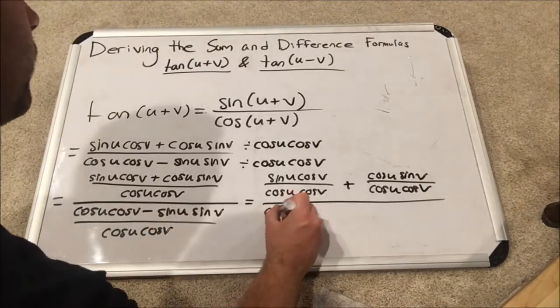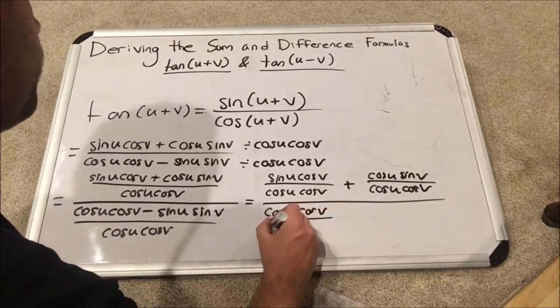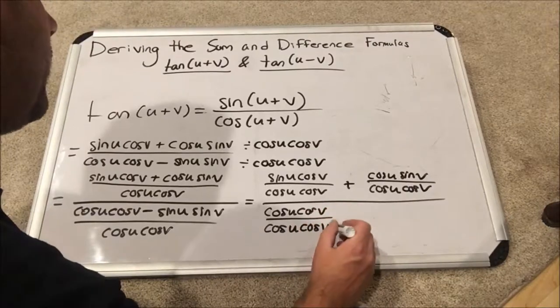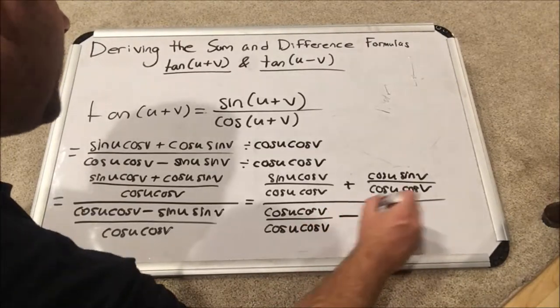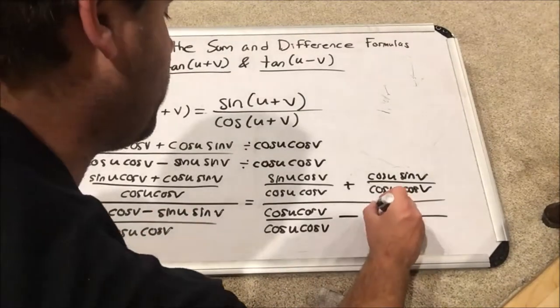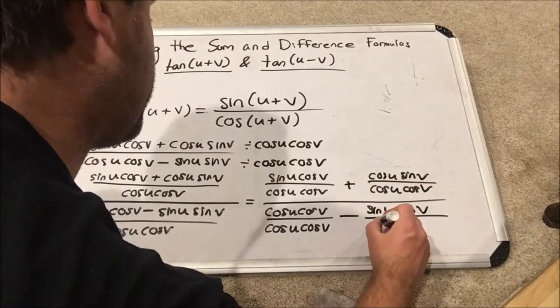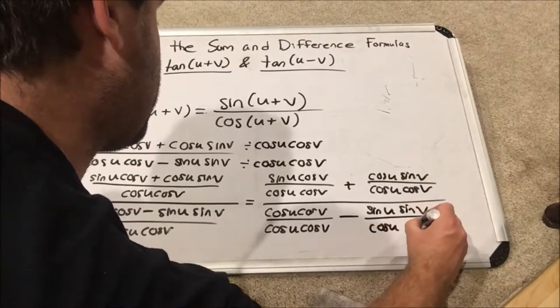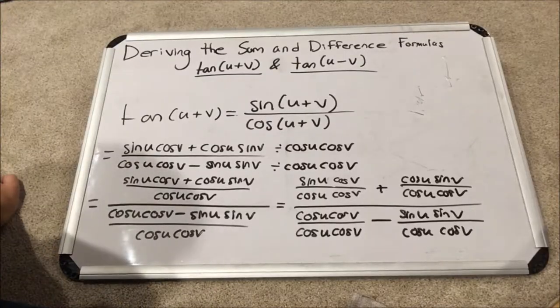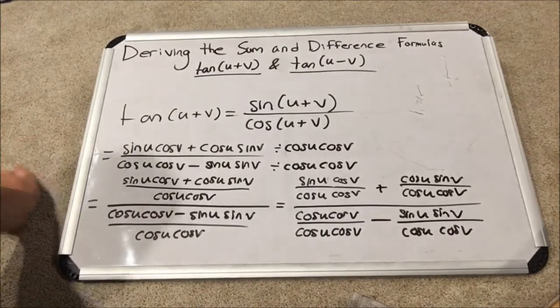Next, on the denominator, we have cosine u cosine v over cosine u cosine v minus, in the last part, we make that its own fraction, sine u sine v over cosine u cosine v. Sorry guys, my gimbal seemed to have a freak out moment there. It got too hot.